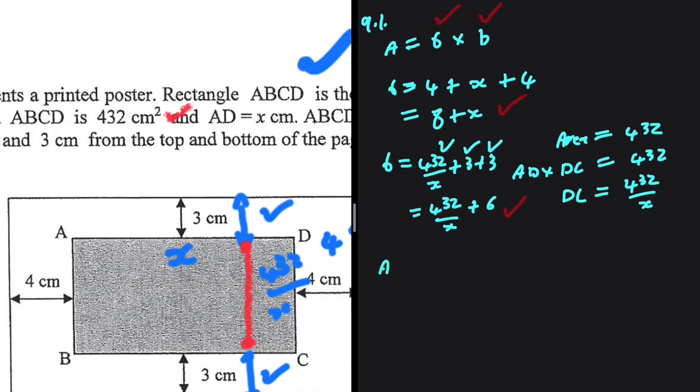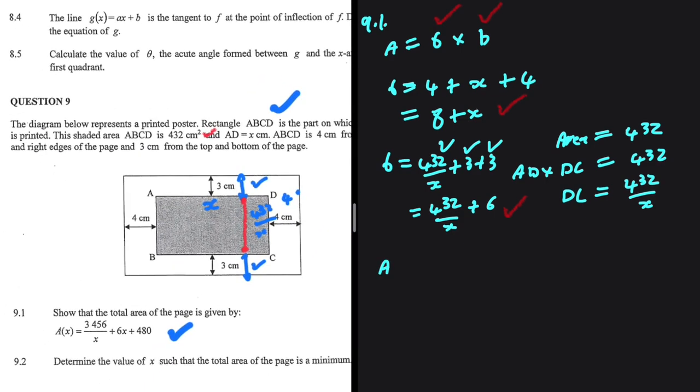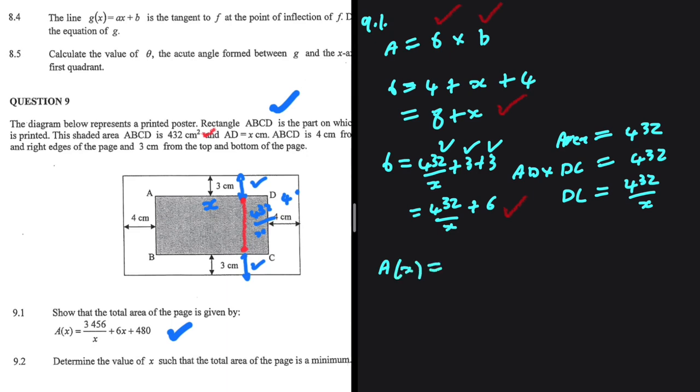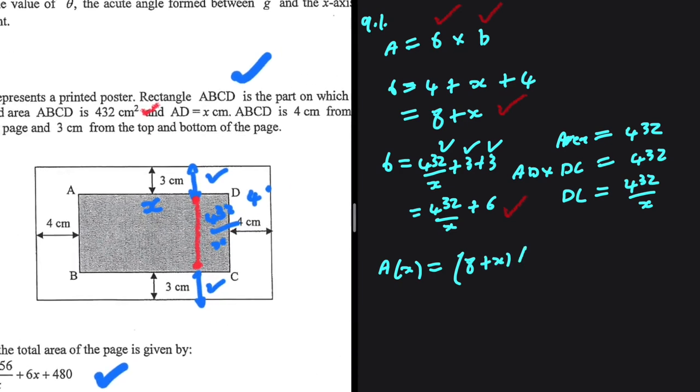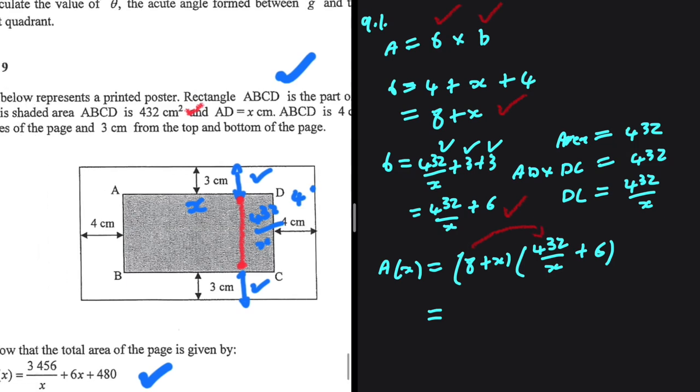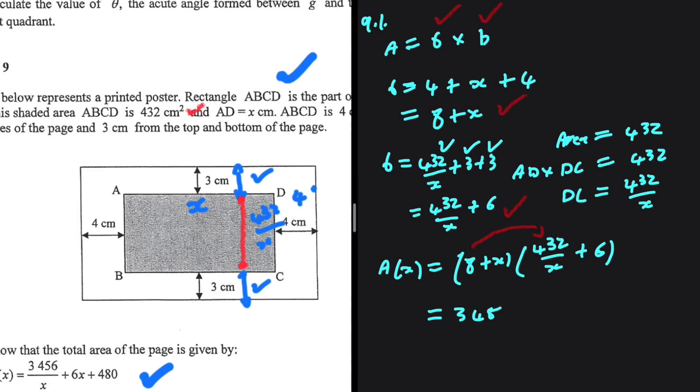So we can say that the area of our poster in terms of x will be equal to the length which is 8 plus x multiplied by the breadth which is 432 divided by x plus 6. So we just have to multiply these two brackets. 8 multiplied by 432 is 432 divided by 6. So that is 48. So we have plus 48.